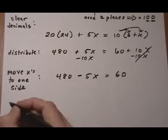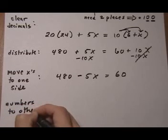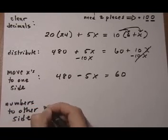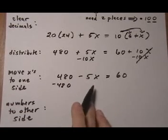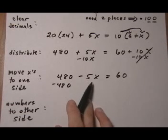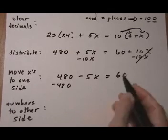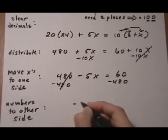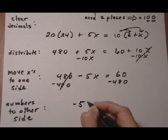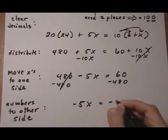Now we want numbers to other side. So we take away the 480 and remember what we're doing is we're trying to get x all by itself on one side of the equation. That's why we need this 480 to go to the other side. We have to get away from the x. Take away 480 on both sides. That cancels out we get minus 5x and then we do 60 take away 480 gives us minus 420.